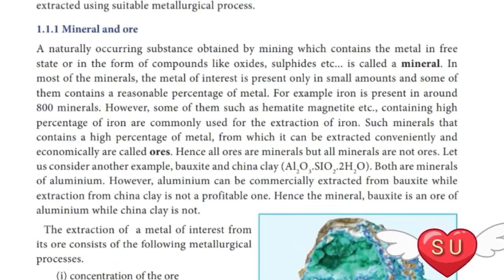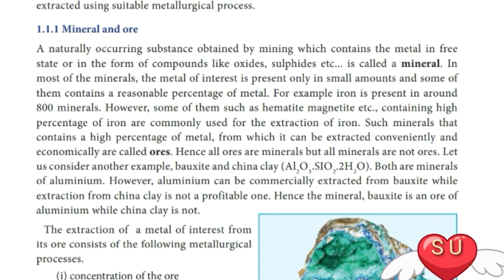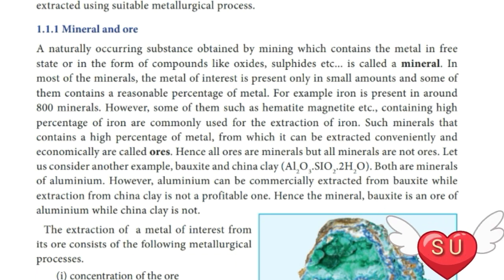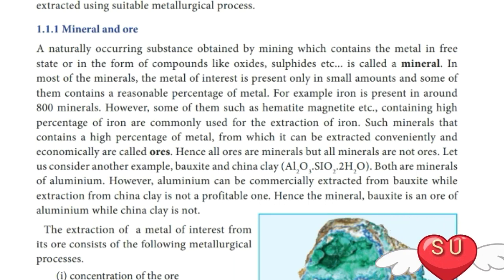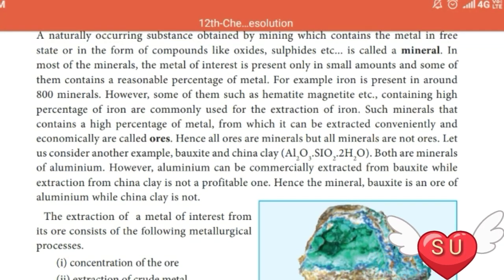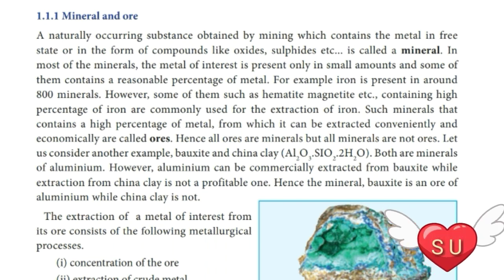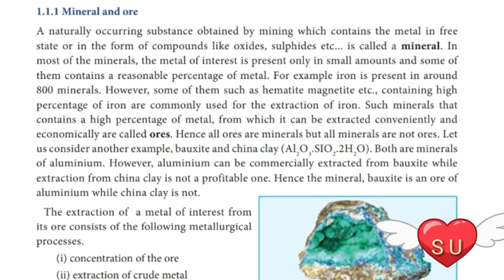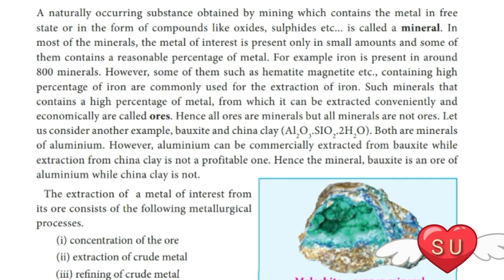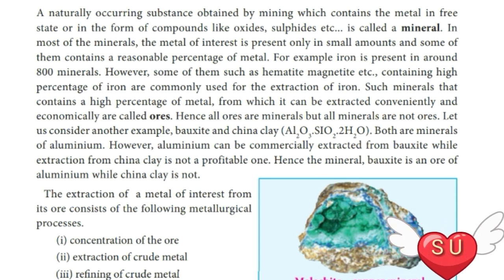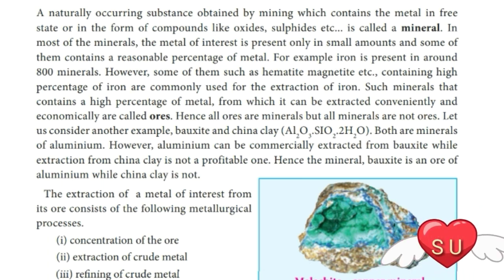Minerals and ores. What is meant by mineral and what is meant by ore? A naturally occurring substance obtained by mining which contains metal in free state or in the form of compounds like oxide or sulphide is called a mineral. In most minerals, the metal of interest is present in only a small amount, but some minerals contain a large percentage of metal. For example, iron is present in around 800 minerals. But among the 800 minerals, very few such as haematite and magnetite consist of a reasonable amount of metal used for the extraction of iron. Such minerals which contain a high percentage of metals are known as ores. Hence, all ores are minerals but all minerals are not ores.